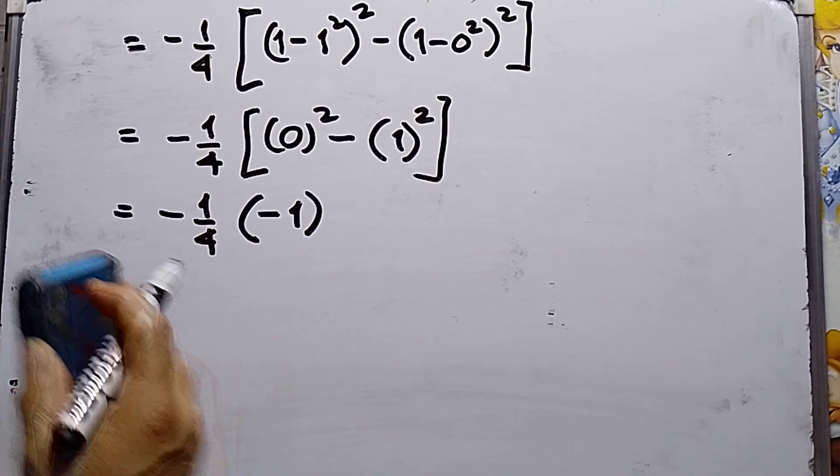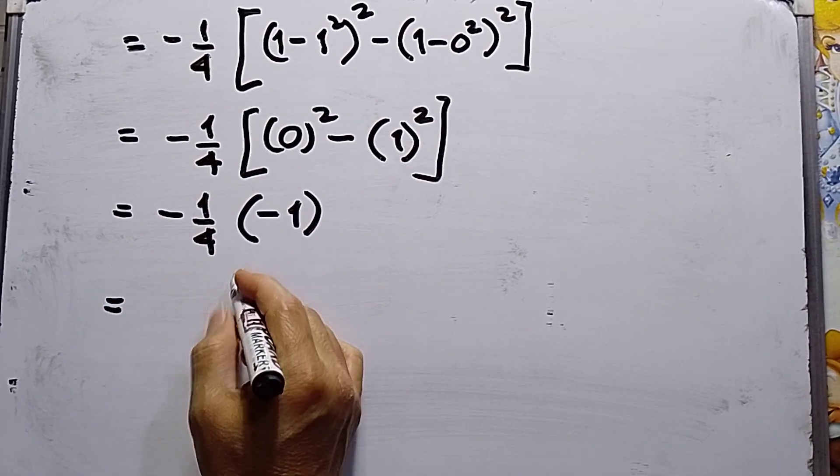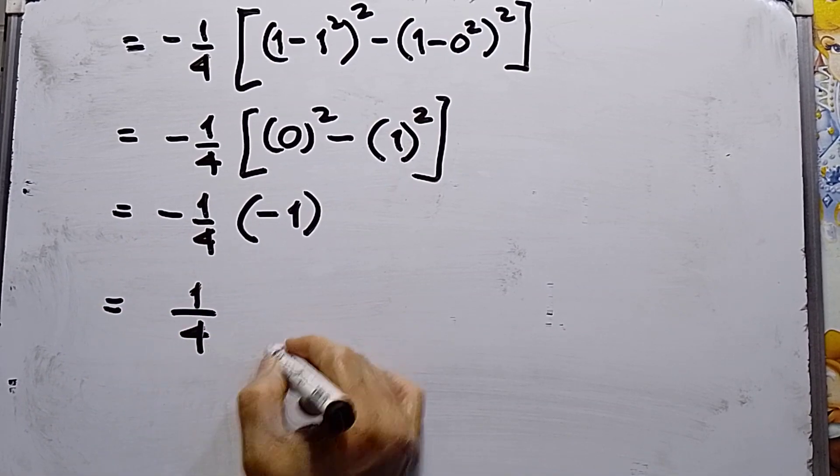Therefore, my final answer is negative 1 fourth times negative 1, so this will be positive 1 over 4. That's all.